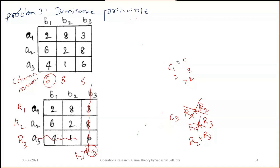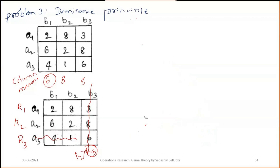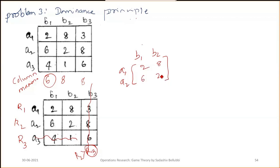The remaining matrix is now a 2×2 matrix, which we know how to solve. The remaining matrix has strategies A1, A2 and B1, B2 with elements: 2, 8, 6, 2.